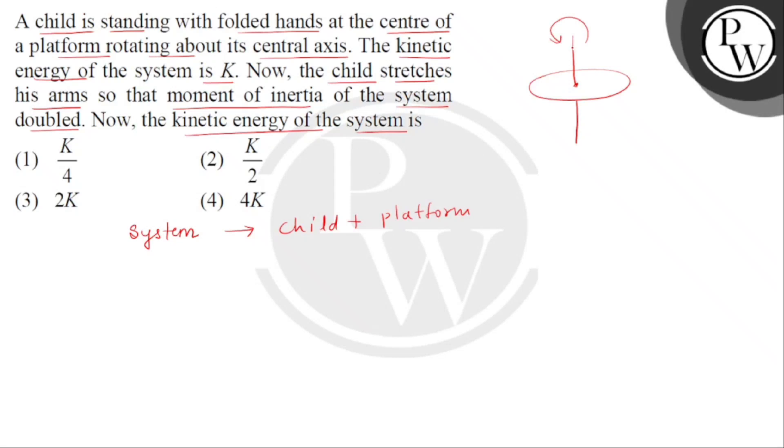Now a child is standing in position and the child's hands are folded like this. So in this diagram we can see that the distribution of mass is close to the axis of rotation. In this case we have given the kinetic energy of the system is K. We can write initial kinetic energy of the system is K, and this is half I omega naught square, which is the angular speed of the system.